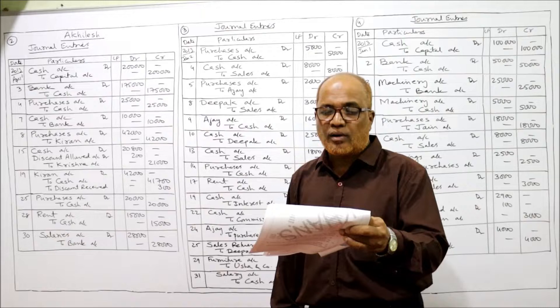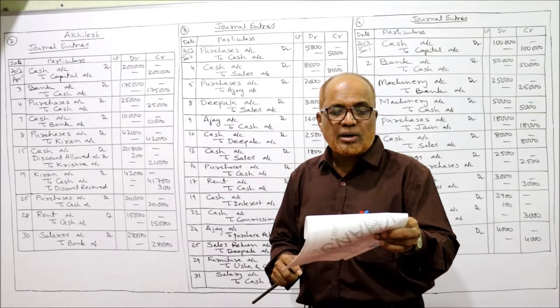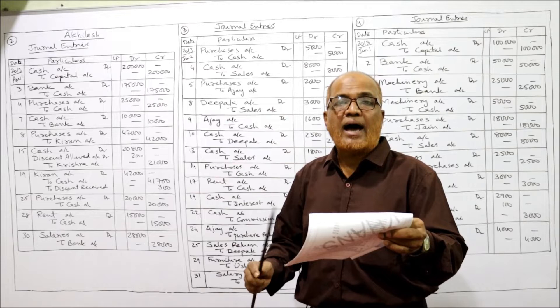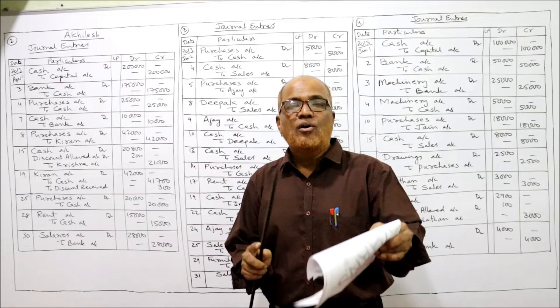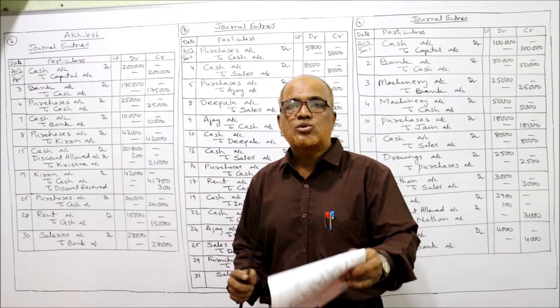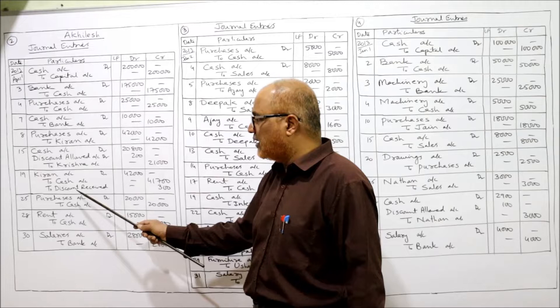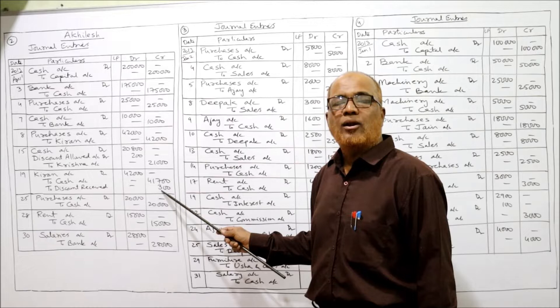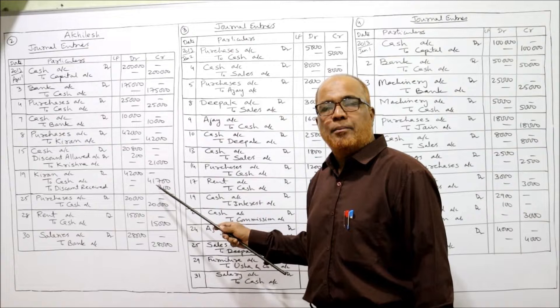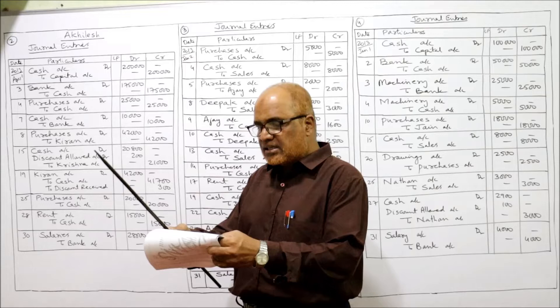Next, 19th: paid to Kiran 41,700 and discount received 300. Actually we have to pay 42,000 (41,700 + 300). Entry: Kiran account debit 42,000, to cash 41,700, to discount received 300. Discount received is an income and all incomes will be credited, so discount received is credited by 300. Being the cash paid and discount received.